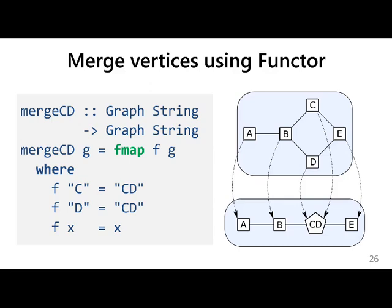So let's see how we can reuse these instances now. If you want to merge vertices, a common operation on graphs, you can just use the functor instance. This is a function that merges vertices c and d in graphs whose vertices are strings. What we do, we just map the following function, mapping function over the graph. And this function tells us that c should be mapped to cd, d should be mapped to cd, and all other vertices should be left as is. And this essentially merges the two vertices. And you get a graph with these two vertices merged.